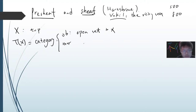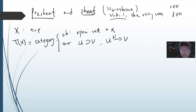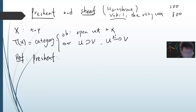The morphisms in T(X) are defined as follows: given two open sets U and V, if V is a subset of U, there is a unique morphism from U to V — basically just the restriction map. The morphism exists only in this situation, and composition is just function composition. With this setup we can define a pre-sheaf.